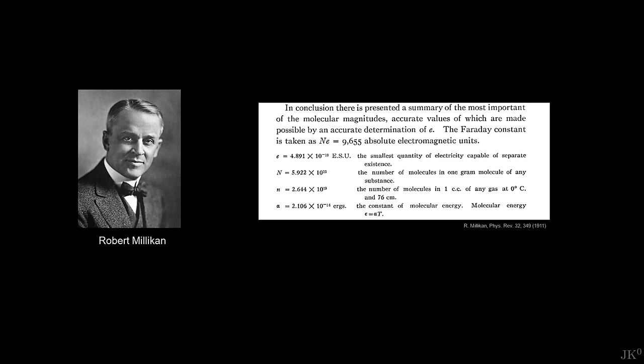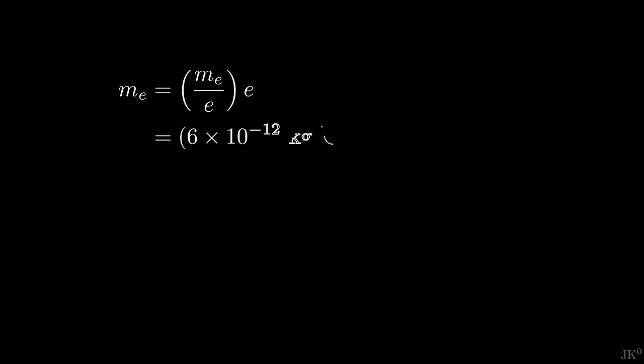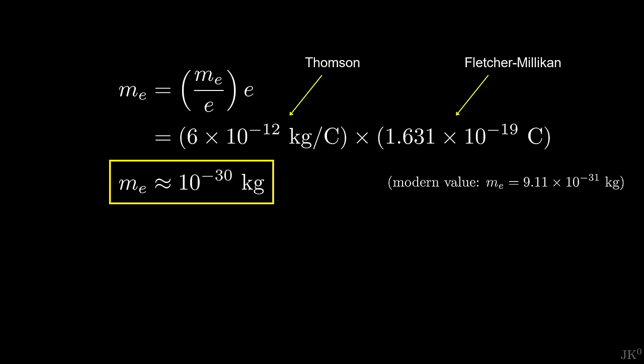The determination of the electron's charge also allowed estimating many other fundamental parameters in molecular chemistry, including Avogadro's number. Millikan's triumph measuring the charge of the electron also led to a definite estimate of the electron's mass from the mass to charge ratio. Using the measurements of Thomson and Fletcher-Millikan, we get a mass close to 10 to the minus 30 kilograms. This mass is about 1000 times smaller than the smallest atom. The result of the oil drop experiment finally confirmed that the electron is indeed a subatomic particle.